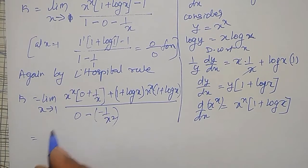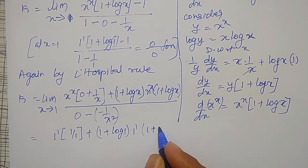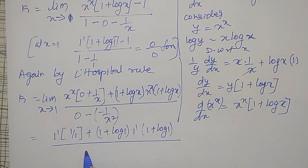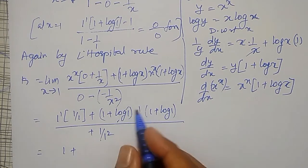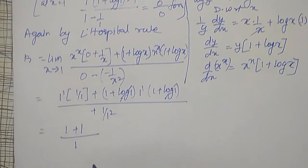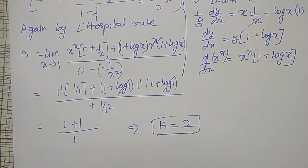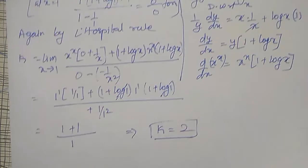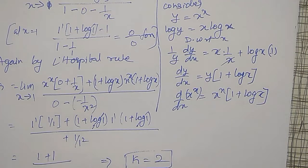The whole is divided by the denominator: differentiation of 1 is 0, minus differential of 1 by x is minus 1 by x squared. Let me simplify at x equal to 1: 1 raised to 1 into 1 by 1, plus 1 plus log 1 into 1 raised to 1 into 1 plus log 1, divided by 1 by 1 squared. Simplifying: 1 by 1 is 1, log 1 is 0, so 1 into 1 is 1 plus 0, plus 1 into 1 into 1 plus 0, divided by 1. Therefore k is equal to 2. The limit as x tends to 1 of x raised to x minus x, divided by x minus 1 minus log x, equals 2.